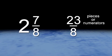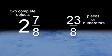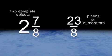There are other types of fractions too. You might see them like this: two and seven eighths, or like this: twenty-three eighths. This means there are enough pieces, or numerators, to make a complete object. In this case, there's enough parts to make two complete objects.